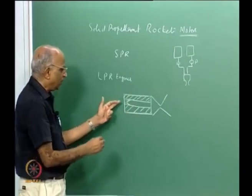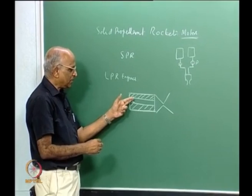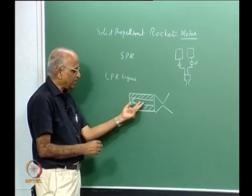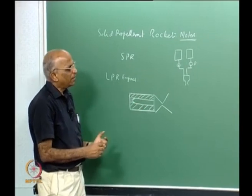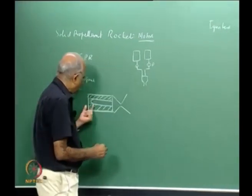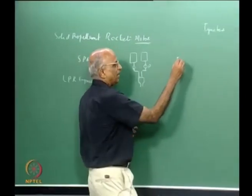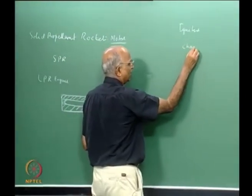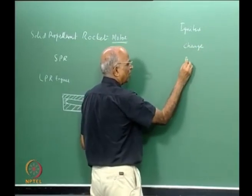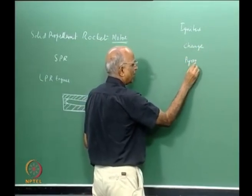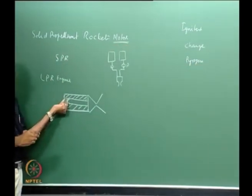When we came to igniters, we said I put a charge which easily burns, impinges on the surface, pressurizes the cavity, and then ignition takes off. We also have different types of igniters: one is a pyrotechnic igniter with a charge that is easily ignitable, and the other is a pyrogen igniter, where we put a small rocket motor itself as the igniter.